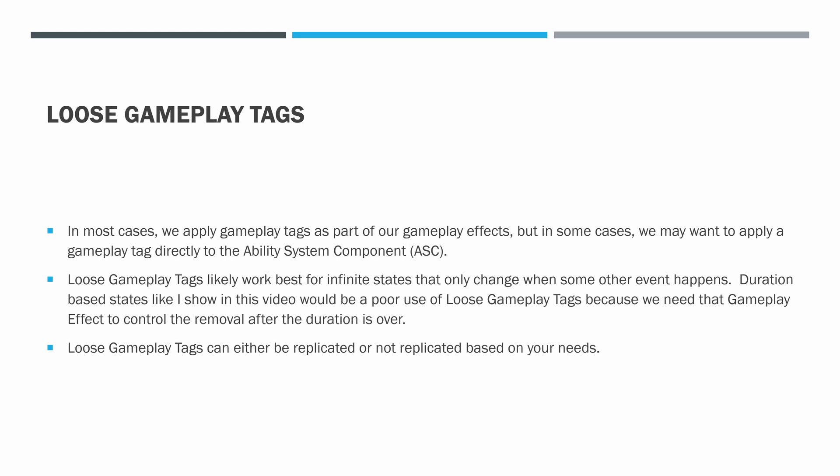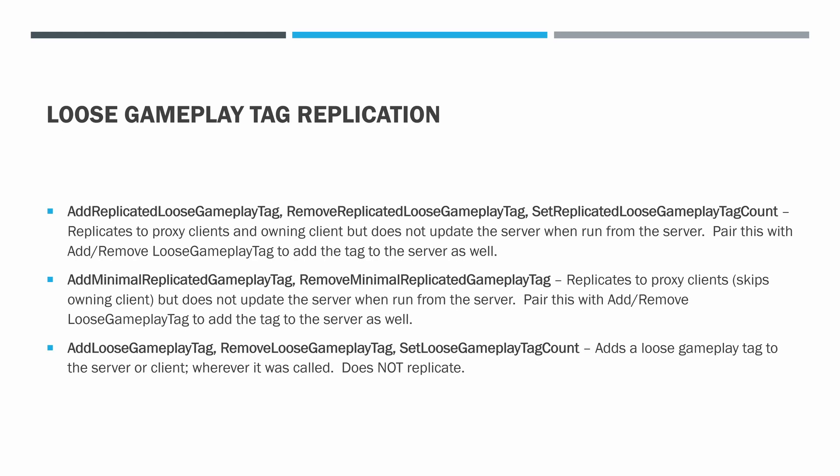Some of the info out there is wrong. You'll often hear people say loose gameplay tags can't be replicated — it's better to say they're not replicated automatically on their own, but they can be replicated depending on your needs. These are primarily handled by using functions: Add Replicated Loose Gameplay Tag and a Remove version, plus a Set Count version. This replicates to proxy clients and the owning client, but keep in mind it does not update the server when run from the server. So you actually have to pair it with the Add/Remove or Set Count version of loose gameplay tag to add to the server as well.